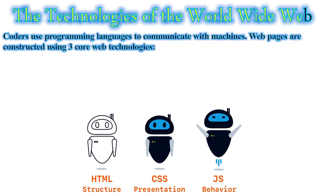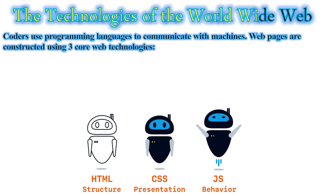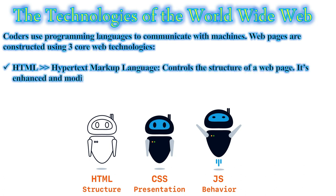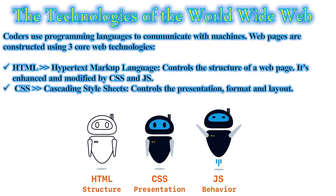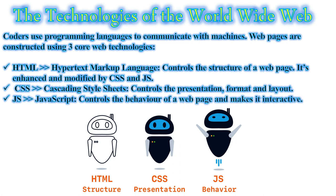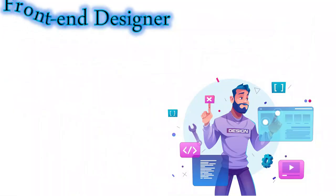Coders use programming languages to communicate with machines, and web pages are constructed using three core web technologies. First, HTML — HyperText Markup Language — controls the structure of a web page. It is enhanced and modified by CSS — Cascading Style Sheets — which controls the presentation, format, and layout. And JavaScript (JS) controls the behavior of a web page and makes it interactive.